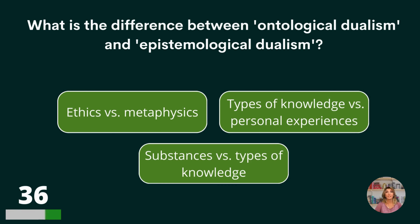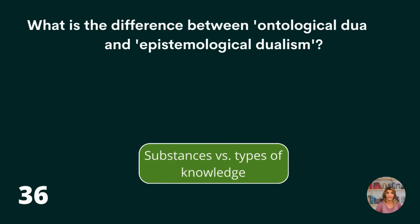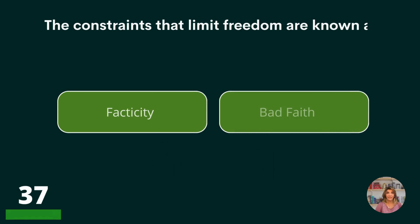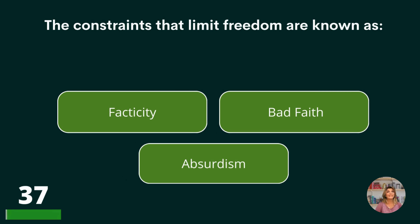What is the difference between ontological dualism and epistemological dualism? Ethics vs. metaphysics, types of knowledge vs. personal experience, or substances vs. knowledge? Substances vs. types of knowledge.